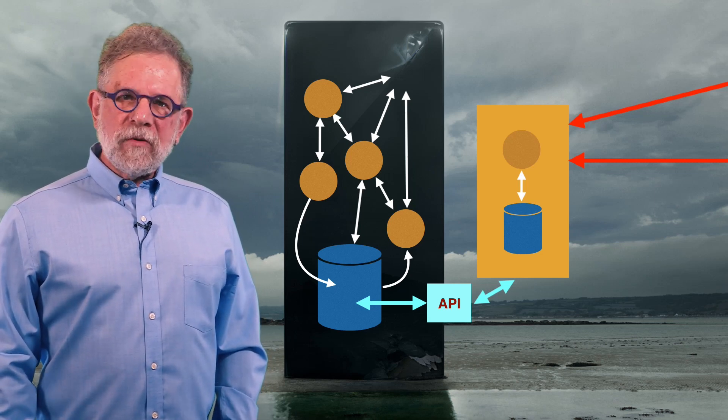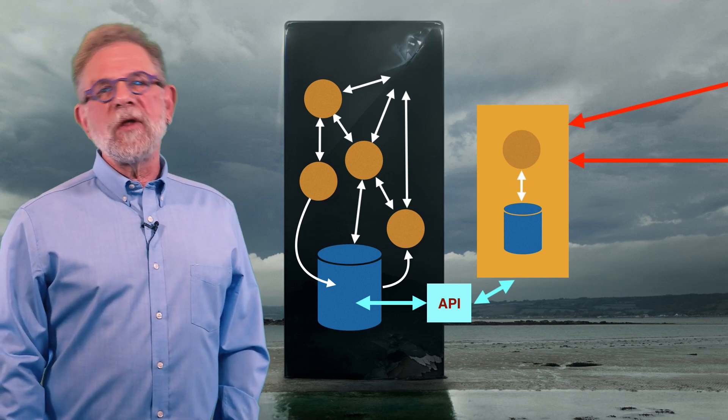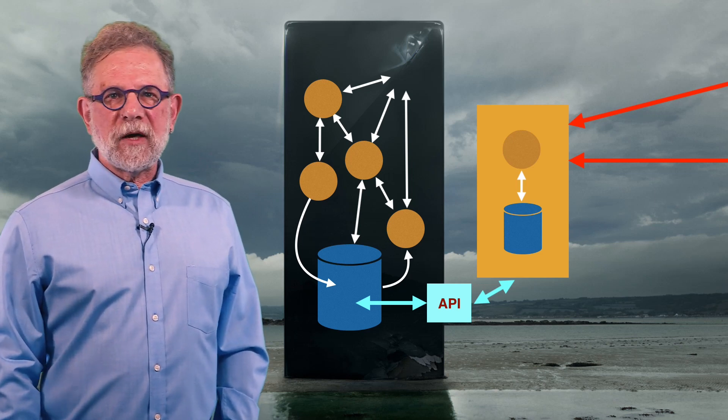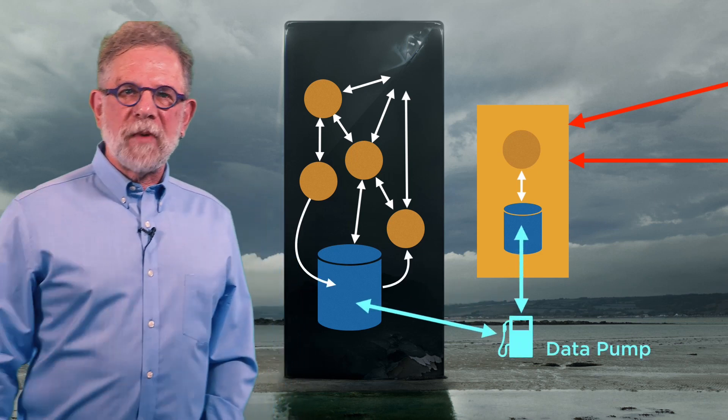So, in this case, the microservice talks to the API and the API is implemented inside the monolith to keep the database in sync with what's happening at the microservice level. Let's assume for the moment, though, that we just have one service, so we'll go back to our data pump model.